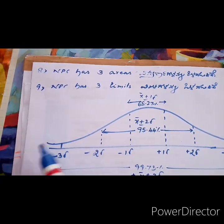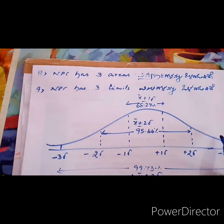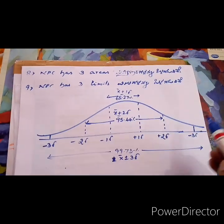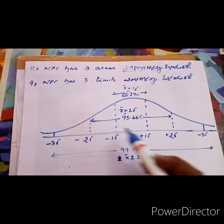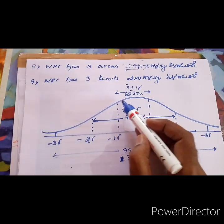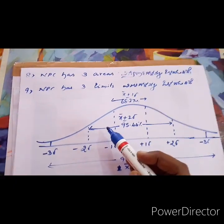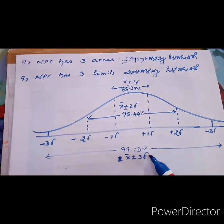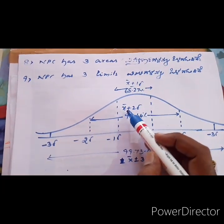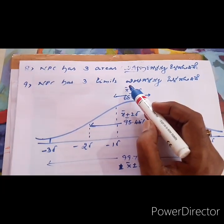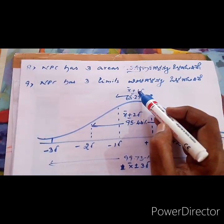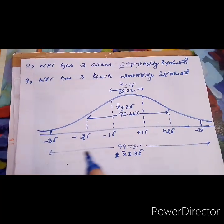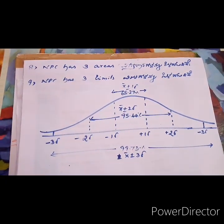It has three areas. Here also, dull students are there, average students are there, and genius students are there. So normal probability curve has three areas. This is one area, and this is second area, and the third is middle area. And at the same time, it has three limits. X bar plus 3 sigma is one limit, X bar plus 2 sigma is another limit, and the third limit is X bar plus 1 sigma. It has three areas and three limits.